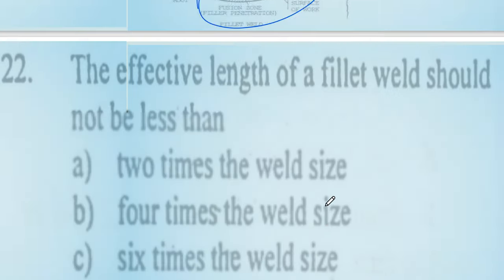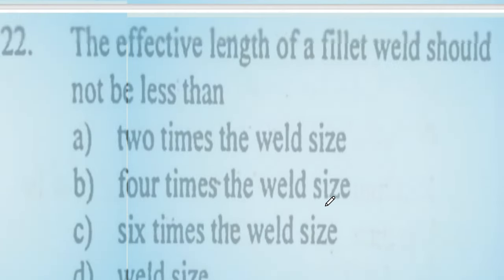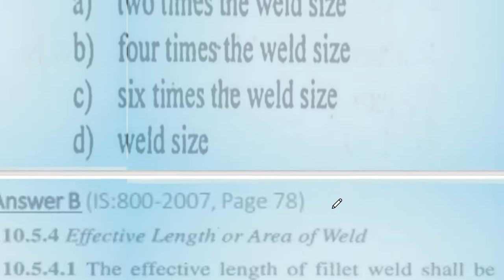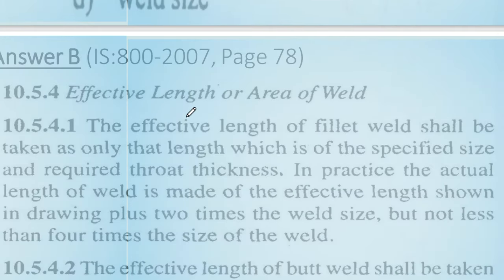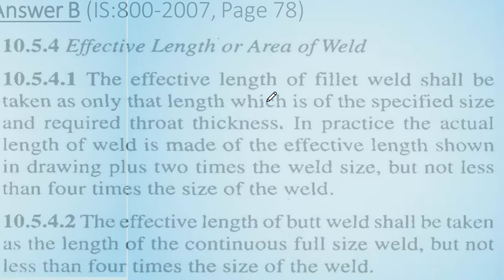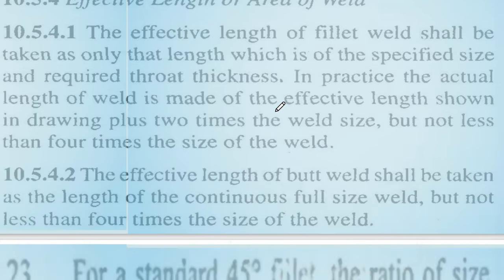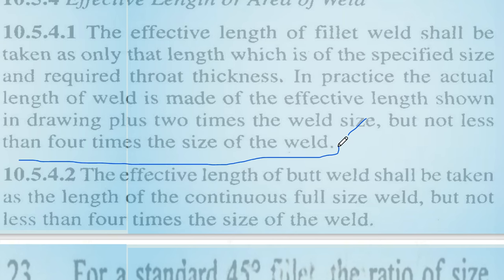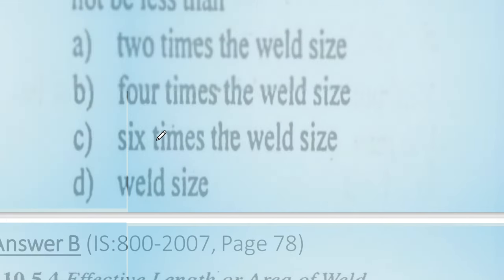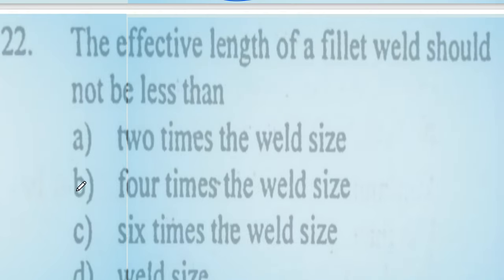Question 22: the effective length of a fillet weld should not be less than four times the size of the weld. In practice, the actual length of the weld is made equal to the effective length shown on the drawing plus two times the weld size, but not less than four times the size of the weld. Option number B is correct.